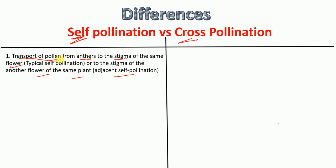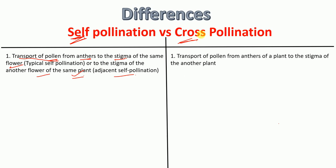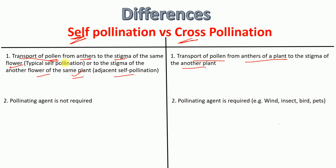So basically, in self-pollination there is a transport of pollen from anthers to the stigma of the same flower or to another flower of the same plant. Whereas in cross-pollination — which means between plants — there is a transport of pollen from anthers of one plant to the stigma of another plant.